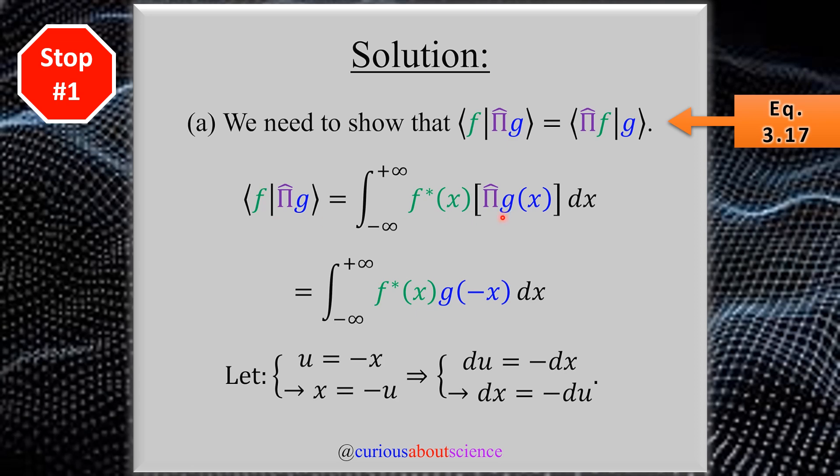We know about the parity operator that it inverts the argument here, so we have an inversion of the function. That gives us g of negative x. But clearly by a quick u sub, letting u equal negative x and therefore x equal negative u, we get du equal negative dx, and therefore dx equals negative du. Pretty quick, pretty simple. Let's plug these in and see what needs to be simplified.